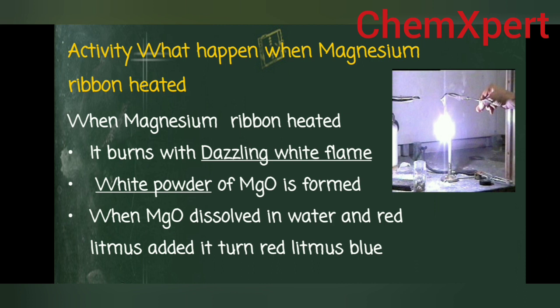Magnesium oxide dissolved in water turns red litmus blue. In the next chapter you will study that substances which are basic in nature convert red litmus into blue. You can read Activity 1.1 in the blue box.